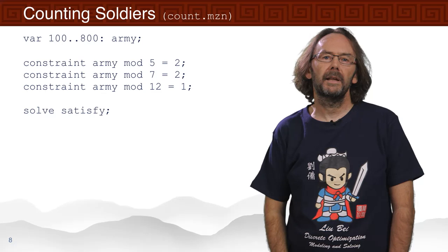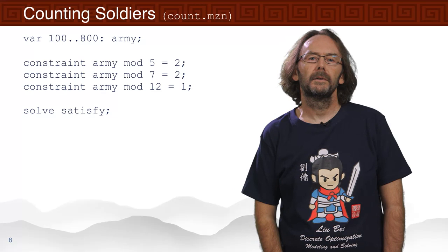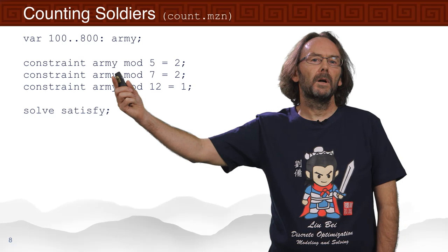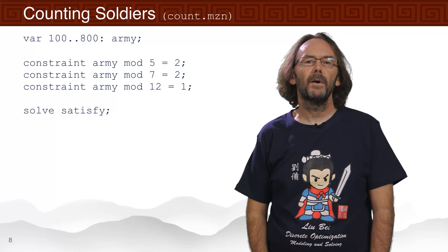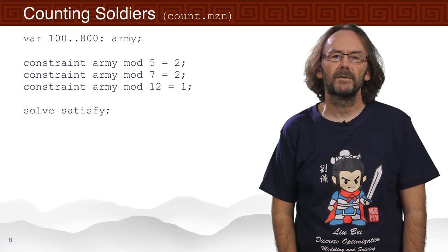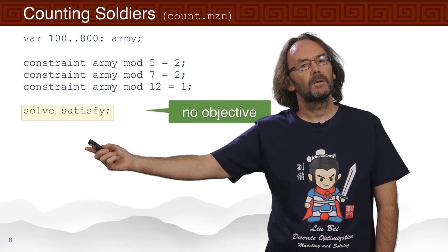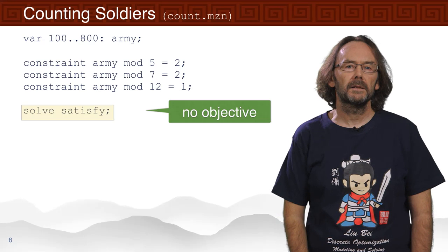Given we originally had something like 496, it's not going to be 800, but it's somewhere in that range. We don't think we lost too many of our soldiers. The constraints say our army mod five was two — we had two left over if we lined them up in lines of five. Our army mod seven was also two, and our army mod twelve was one. And then we've said solve satisfy, so we're not trying to optimize anything, we're just trying to find a solution.